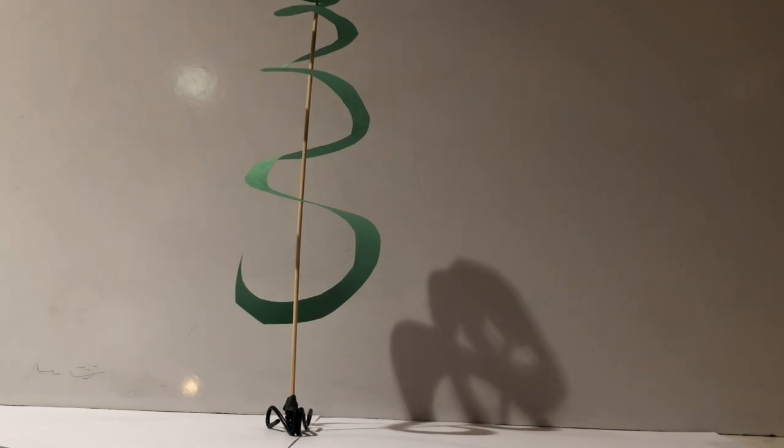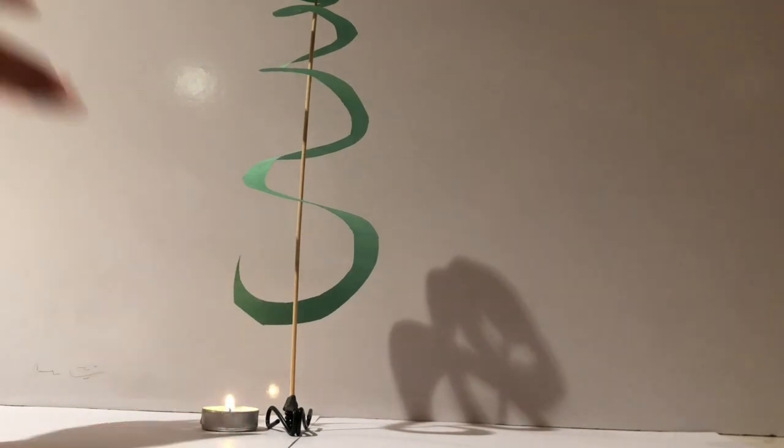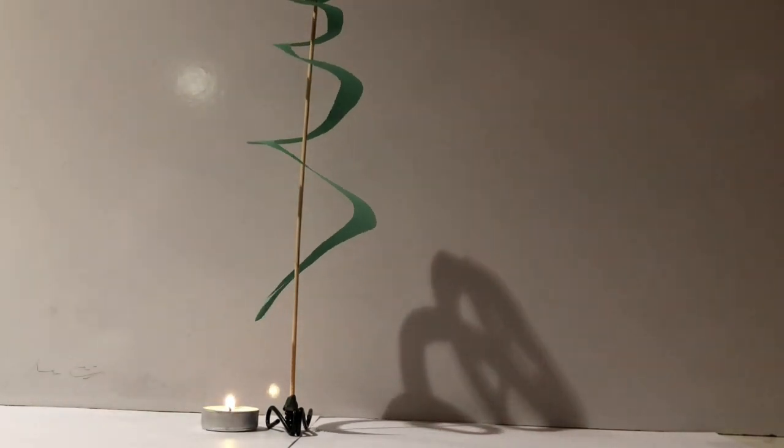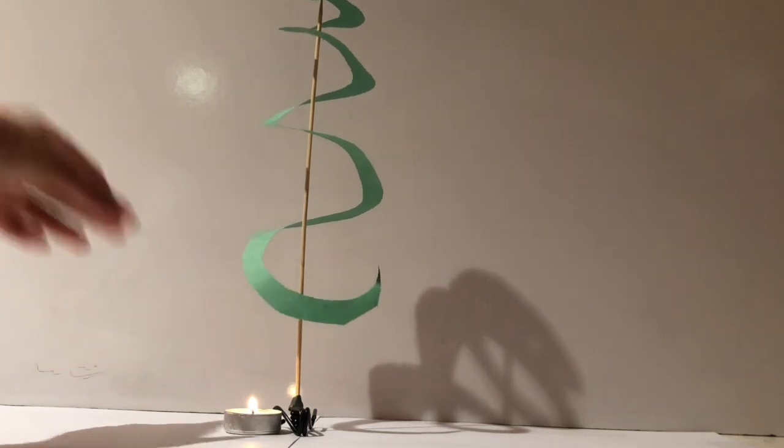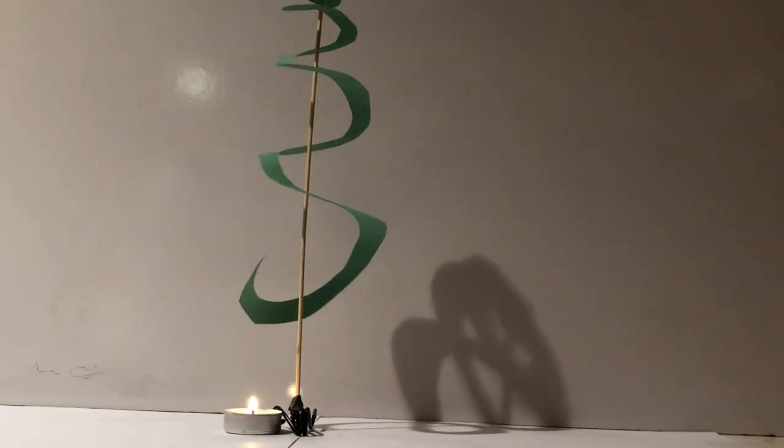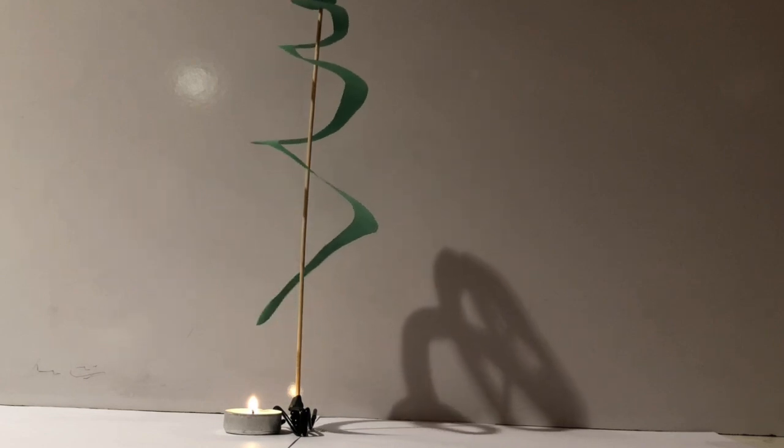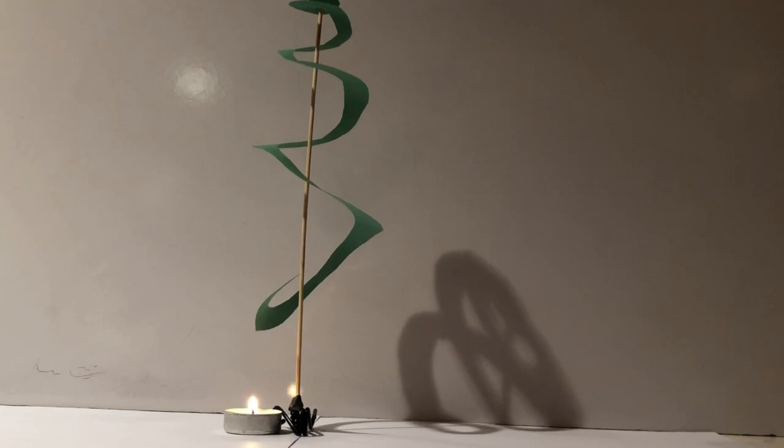Then take your candle and place it near the end of the tail and then watch and see what happens. What should happen is for your snake to revolve. It might take a few times to get it in the right place. As you see I had to move it a little bit to get it closer so that it would start revolving more.